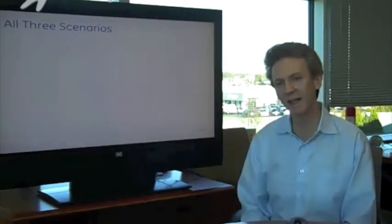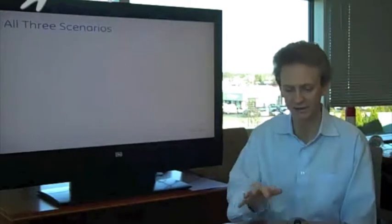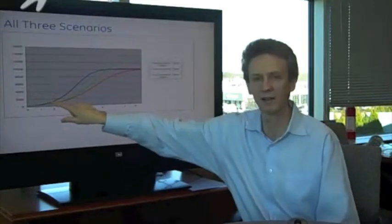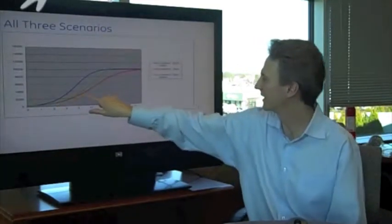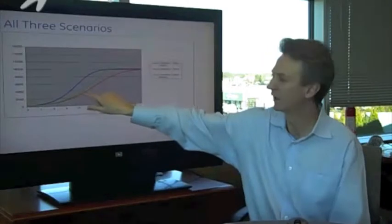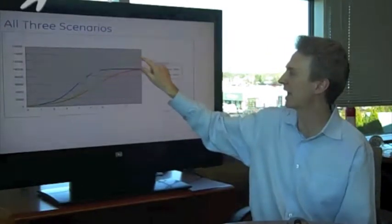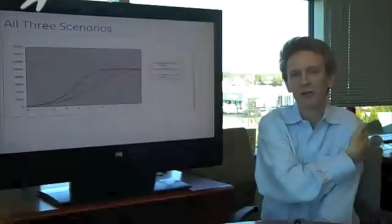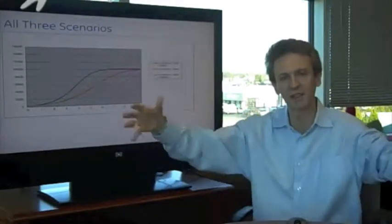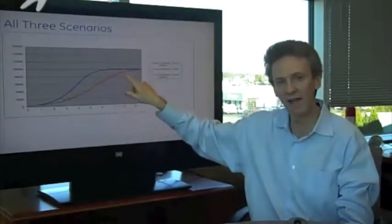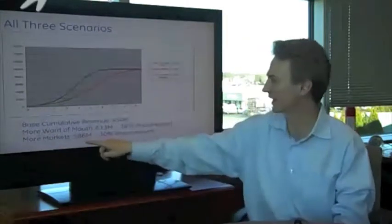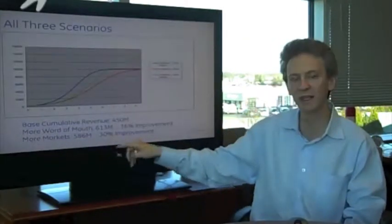So then I did the other option, which is to invest in more markets. Let's take a look at that. You have the base case, you have the more talkers which is the blue, and then this one is the adding more markets. You can see the adding more markets has little impact in the beginning and then takes over, having a big impact in the end. So this is a great strategy as well to invest in these markets, especially in the latter phases where that saturation really has an impact. So the net result was the more markets is actually $586 million, so it's a 30% improvement.